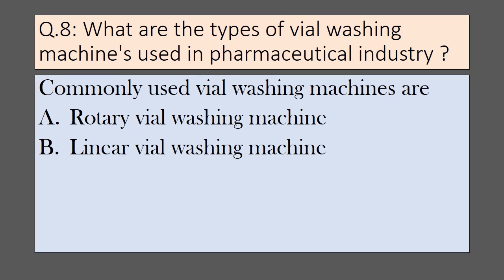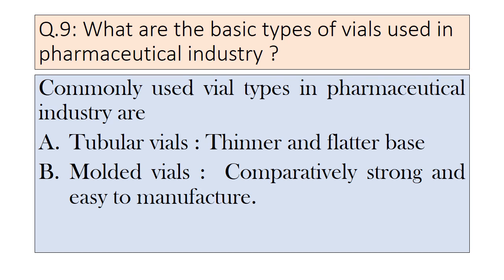The next question is: what are the types of vial washing machines used in the pharmaceutical industry? Commonly used vial washing machines are rotary vial washing machines or linear vial washing machines. In the pharmaceutical industry, two types of vials are commonly used: tubular vials and molded vials. Tubular vials have a thinner and flatter base, whereas molded vials have a comparatively stronger structure and are easier to manufacture.